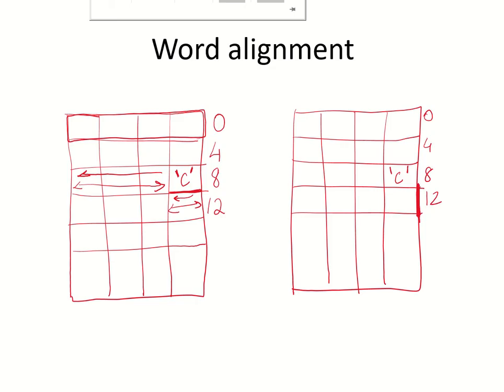This boundary would be a multiple of the word length. Here the word length is four bytes, so this is the next word boundary, and this is the next word boundary. Had the word length been two bytes — for example, a 16-bit machine — the word boundaries would start at every two bytes: this would be the next word boundary, then this one, then this one, and so on.